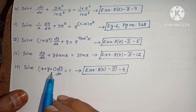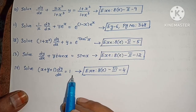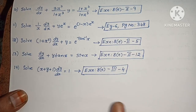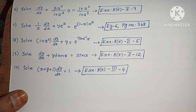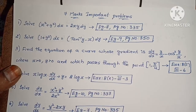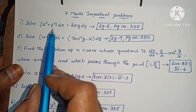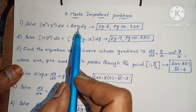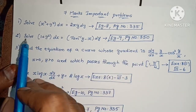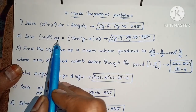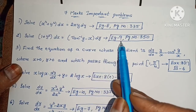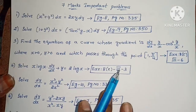Next, solve (x plus y plus 1)·(dy/dx) equals 1. The 4 marks problems are complete. Now 7 marks important problems — first one: solve (x² plus y²)·dx equals 2xy·dy. Example 8, page number 335. Next, solve (1 plus y²)·dx equals (tan⁻¹y minus x)·dy. Example 9, page number 350.